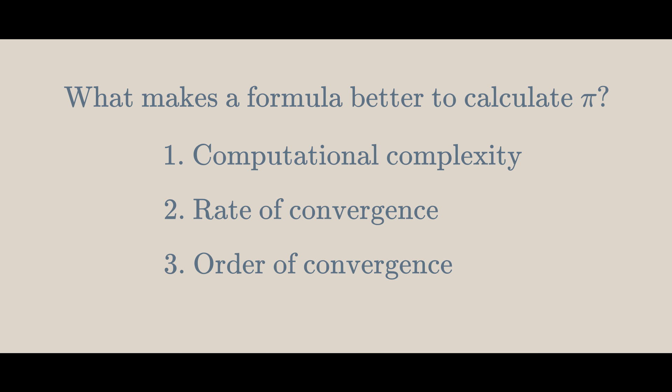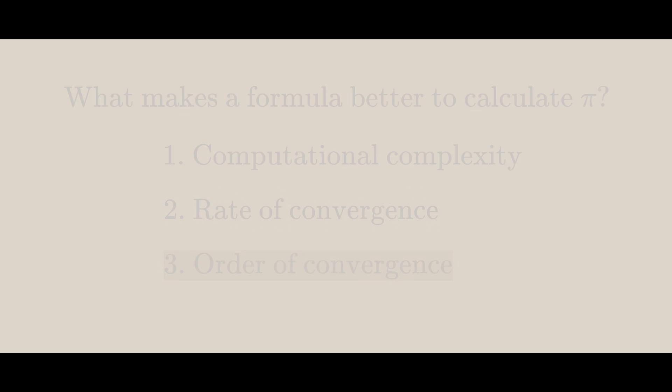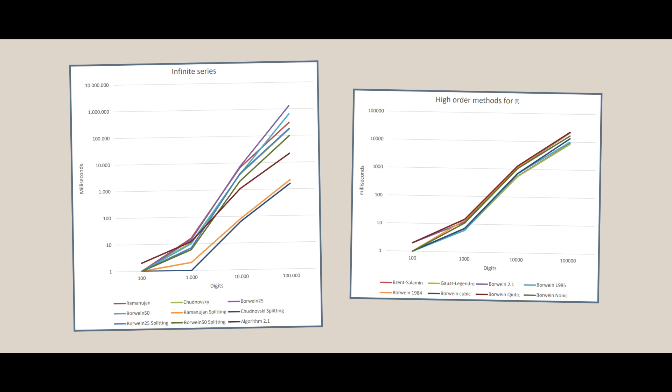This shows that there has to be a balance of all things: computational complexity, rate of convergence, and order of convergence. If you compare highly optimized versions of different algorithms, you would get that the Chudnovsky algorithm would give the most correct digits in the least amount of time.